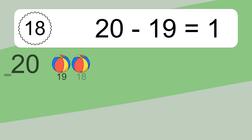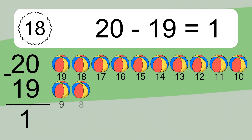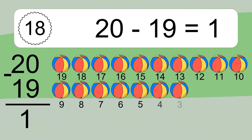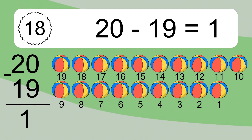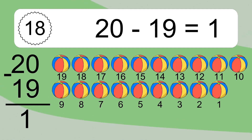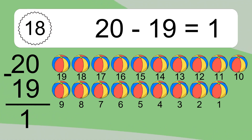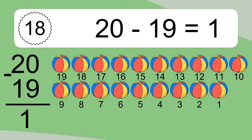20 minus 19 equals 1. Let's count it: 19, 18, 17, 16, 15, 14, 13, 12, 11, 10, 9, 8, 7, 6, 5, 4, 3, 2, 1. 12 minus 7 equals what?